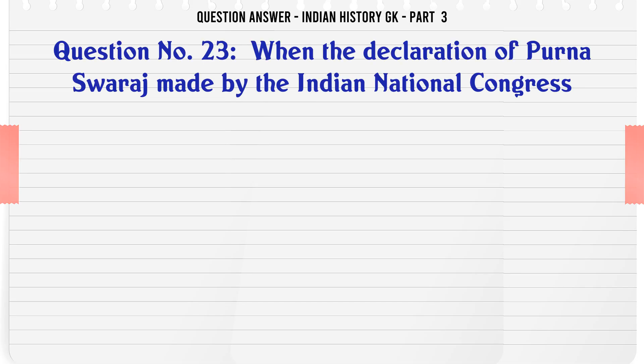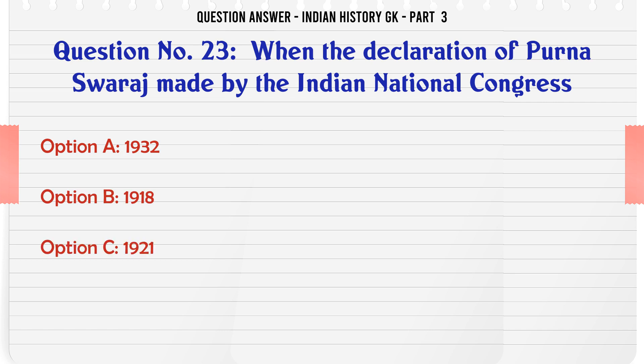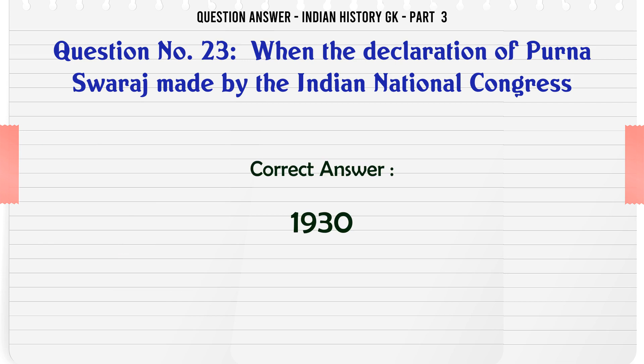When was the declaration of Purna Swaraj made by the Indian National Congress? A. 1932, B. 1918, C. 1921, D. 1930. The correct answer is 1930.